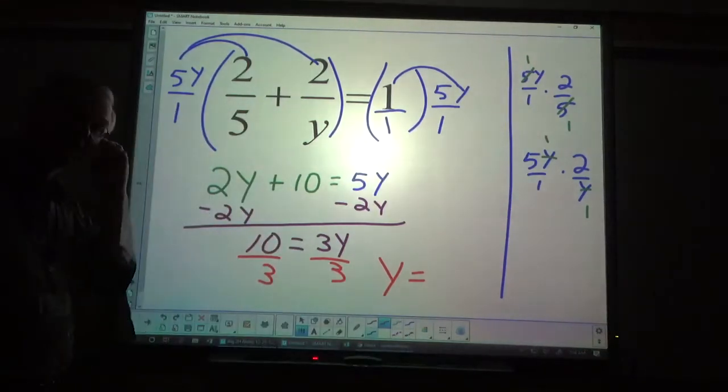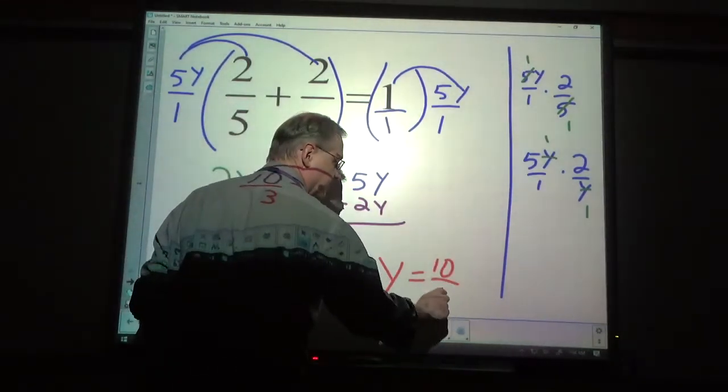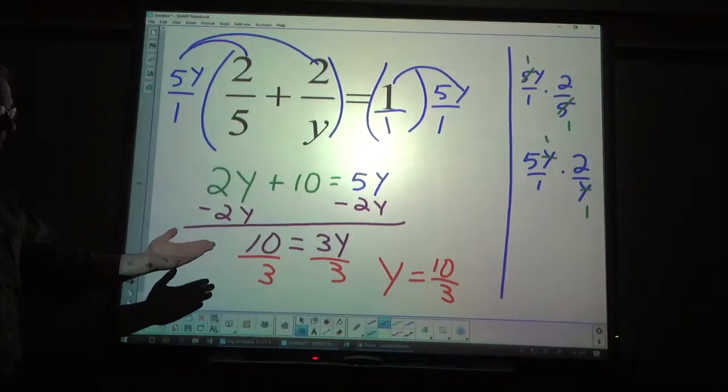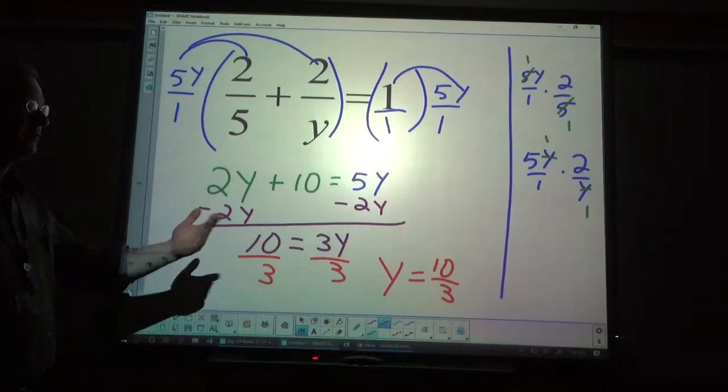And then, I'm going to divide both sides by 3. You can leave it as ten-thirds for me. I'm happy with that. Some teachers may want you to write it as a mixed number, three and one-third.